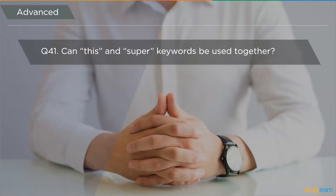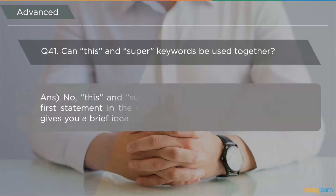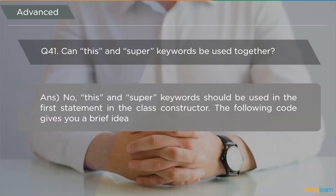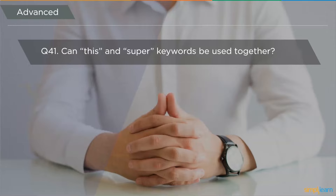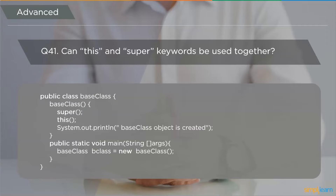The first advanced question is: can the keywords 'this' and 'super' be used together? No — 'this' and 'super' keywords should each be used in the first statement in a class constructor. A code segment example demonstrates using both 'super' and 'this' in a class constructor to understand how to use them together.